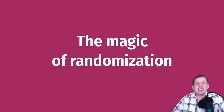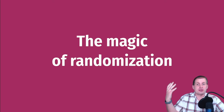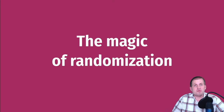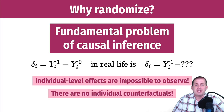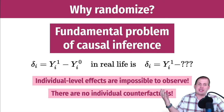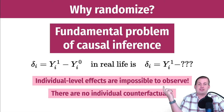First we're going to talk about this idea of randomization and why it's so important when you're trying to find causal effects in the real world. Why we care about this is related to the fundamental problem of causal inference, which we've talked about a lot in the past couple sessions. This fundamental problem is essentially that you cannot observe individual level effects.